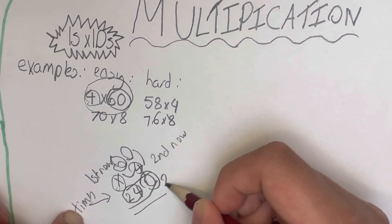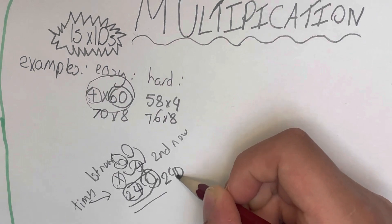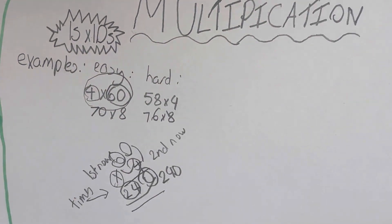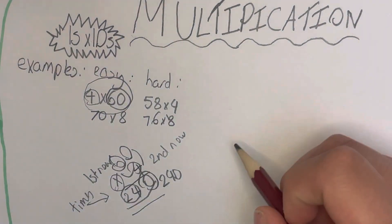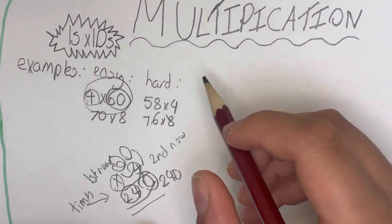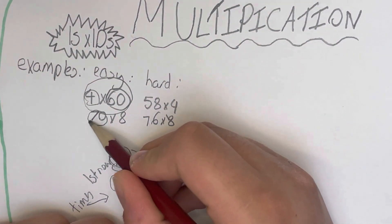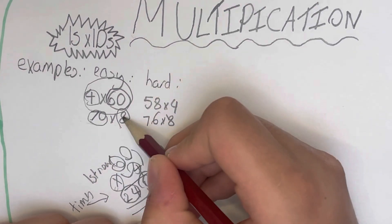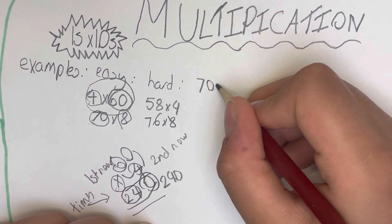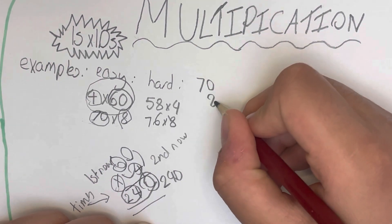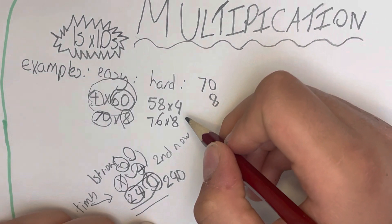Right, for the second easy one, we're going to be doing first column and second column, first row, second row. So 70 for the first row and 8 for the second row. And we also need to have the times symbol to remind us that we're doing multiplication.